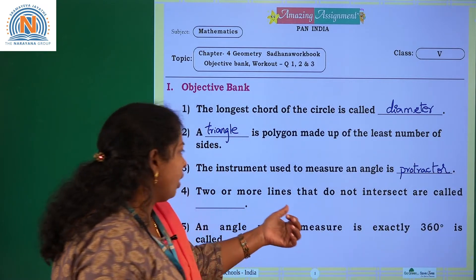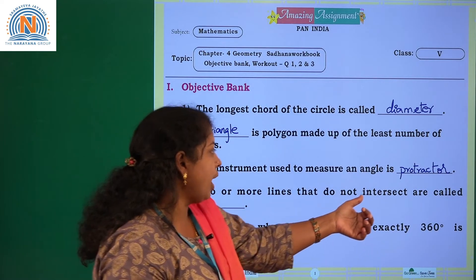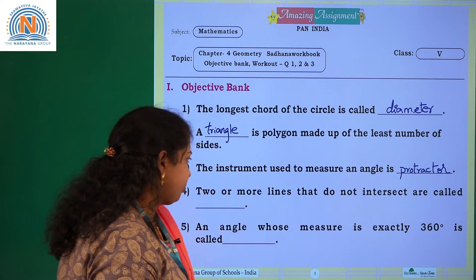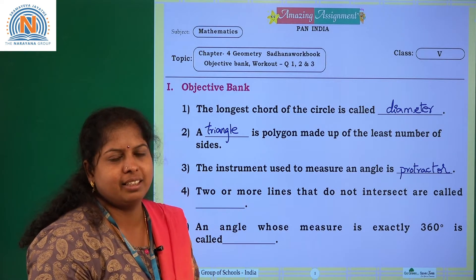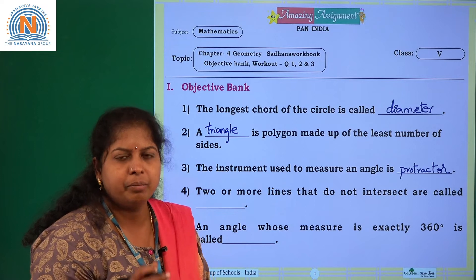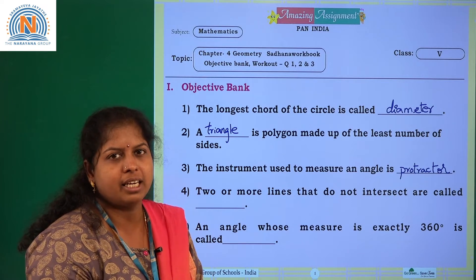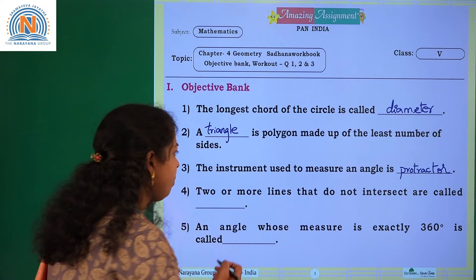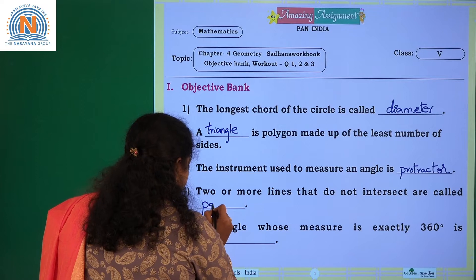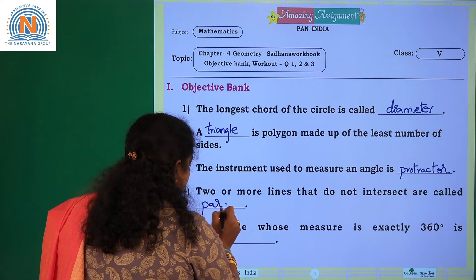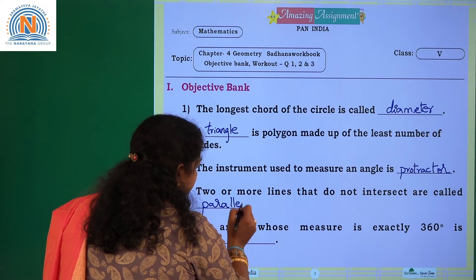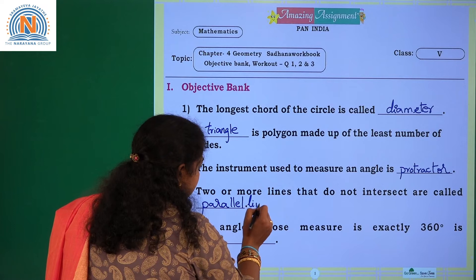Two or more lines that do not intersect are called what? They are not intersecting anywhere. Those lines are known as parallel lines. What do you call such lines, children? Parallel lines.